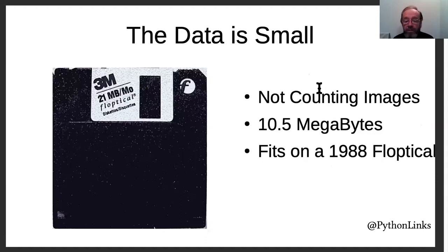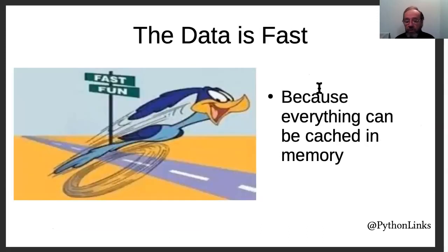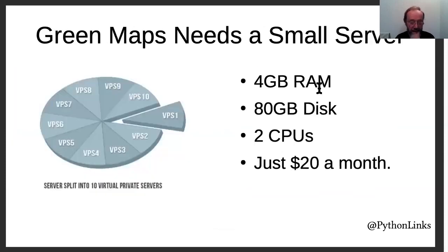It's also very small. Not counting images, the whole thing fits in 10.5 megabytes — it'll fit on half of a Floptical. It's really fast because there's so little data you just cache everything in memory. On top of that, we have a caching web server so that the anonymous user just gets instantly served web pages. Because it's so small, you don't need much of a server. Even during the elections, we only had a four-gigabyte server, maybe two CPUs, 80 gigabytes — $20 a month on Linode or DigitalOcean.